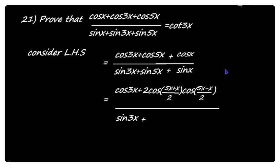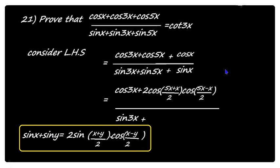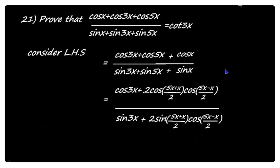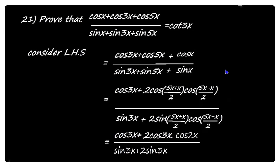Similarly in the denominator, sin 3x stays and sin 5x plus sin x uses sin x plus sin y = 2 sin((x+y)/2) into cos((x-y)/2), giving 2 sin((5x+x)/2) into cos((5x-x)/2). Simplifying: numerator becomes cos 3x plus 2 cos 3x into cos 2x; denominator becomes sin 3x plus 2 sin 3x into cos 2x.